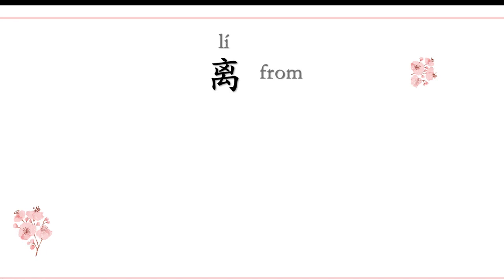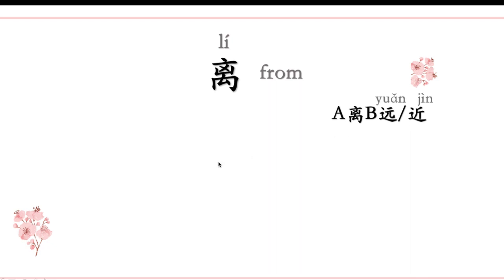Just now the word was 里 (third tone). Now this preposition is 离 (second tone). It is used in a fixed sentence structure that you cannot change: A 离 B 远 (A is far from B), or A 离 B 近 (A is close to B). Let me give you an example.